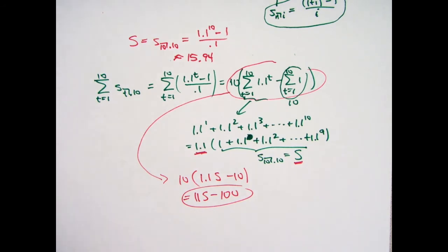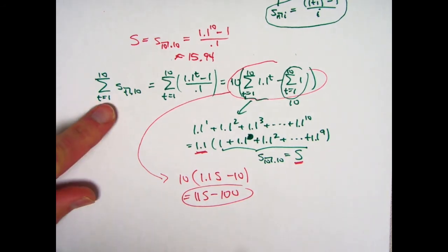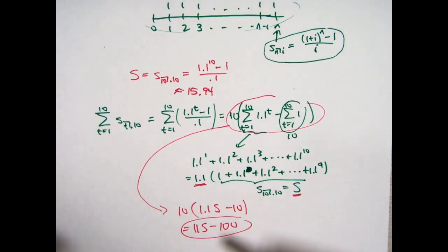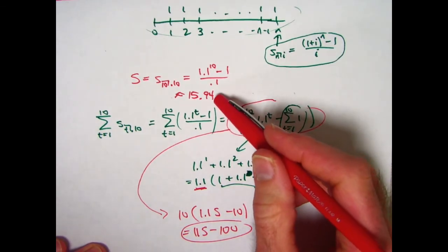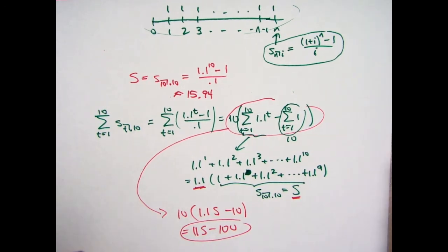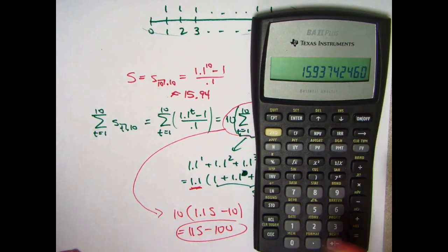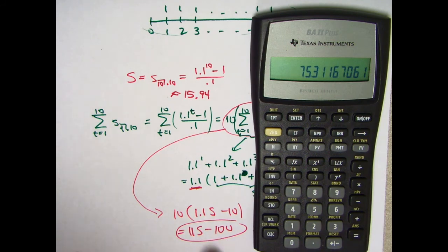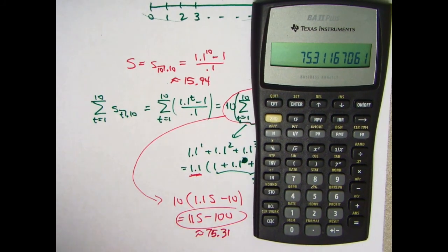That's an expression in terms of s, an algebraic expression for the summation. If you wanted to find its value, you certainly could do so. You could plug the 15.94 maybe with more decimals into this. So multiply this times 11 and subtract 100. This has a value of about 75.31. You're not asked for that, but you could find it if you needed to.